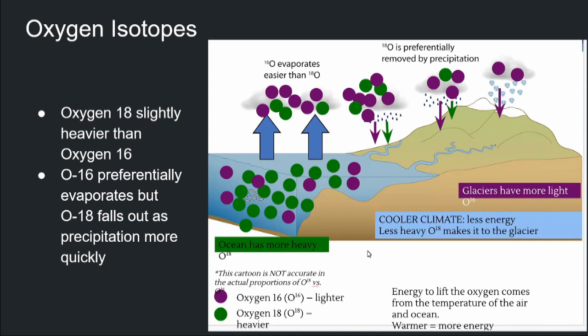Those atoms of oxygen can have a different number of neutrons in their core, meaning that we can make the difference between an atom of oxygen that's slightly heavier, that we call oxygen-18, and differentiate that from oxygen-16, which is a slightly lighter version of the same atom.